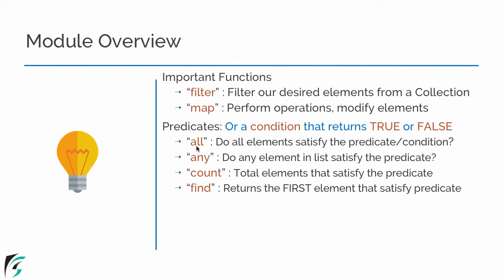The `all` method simply asks the question: do all elements satisfy the predicate or the condition? It will return either true or false, a boolean value. The `any` method asks: do any of the elements present inside the list satisfy the condition or the predicate? It again returns true or false. The `count` method returns the total number of elements that satisfy the condition or the predicate. And `find` simply returns the first element that satisfies the predicate.